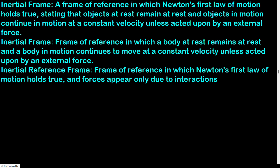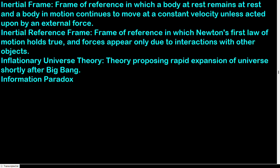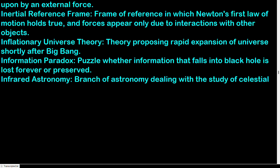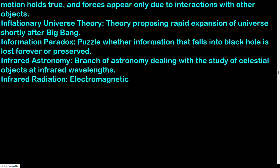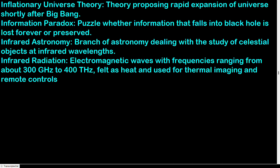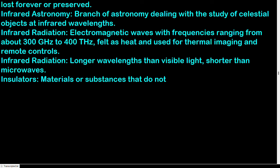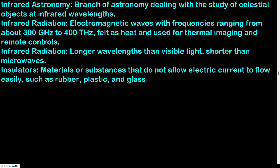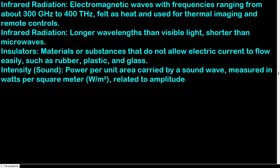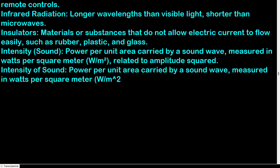Inflationary universe theory: theory proposing rapid expansion of the universe shortly after the Big Bang. Information paradox: puzzle about whether information that falls into a black hole is lost forever or preserved. Infrared astronomy: branch of astronomy dealing with the study of celestial objects at infrared wavelengths. Infrared radiation: electromagnetic waves with frequencies ranging from about 300 GHz to 400 THz, felt as heat and used for thermal imaging and remote controls — longer wavelengths than visible light, shorter than microwaves. Insulators: materials that do not allow electric current to flow easily, such as rubber, plastic, and glass.